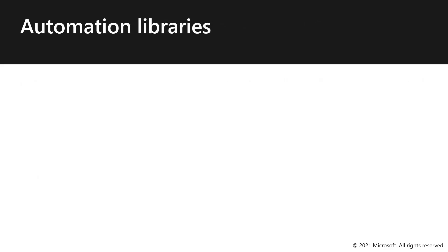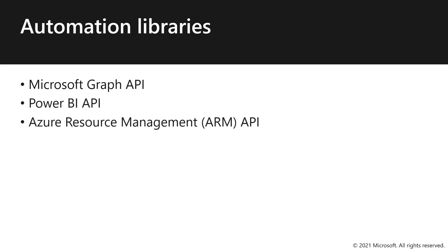There are three automation libraries you can use: the Microsoft Graph API, the Power BI API, and the Azure Resource Management or ARM API.